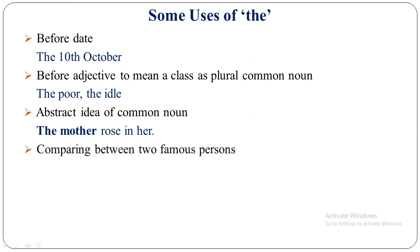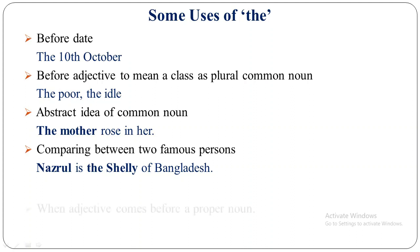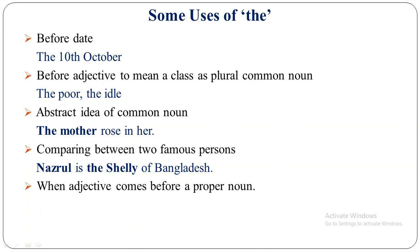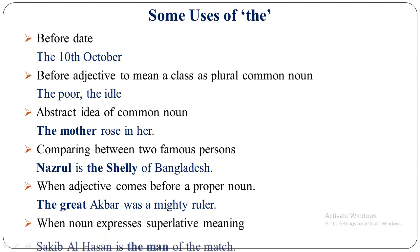Comparing between two famous persons: for example, 'Nazrul is the Shelley of Bangladesh' — here Nazrul is compared to Shelley, so we use THE before the compared person Shelley. When an adjective comes before a proper noun: 'The great Akbar was a mighty ruler' — Akbar is a proper noun and great is an adjective before it, so we use THE before 'great'. When a noun expresses superlative meaning: 'Shakib Al Hasan is the man of the match' — man is a common noun here but it means superlative meaning, so we use THE.